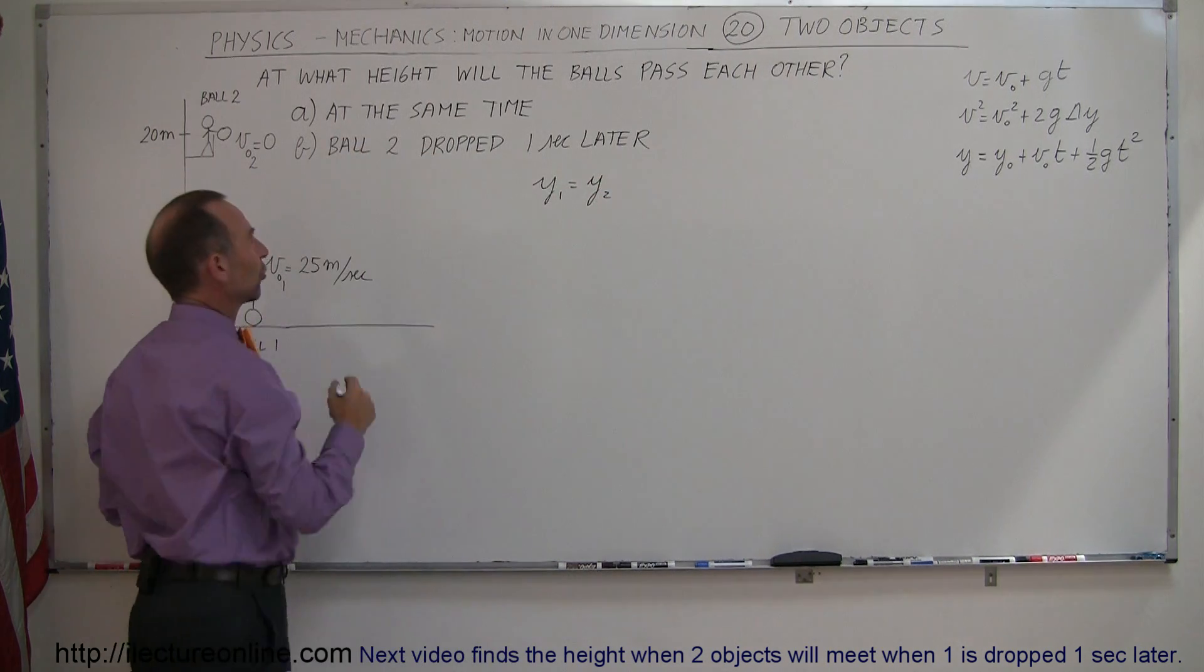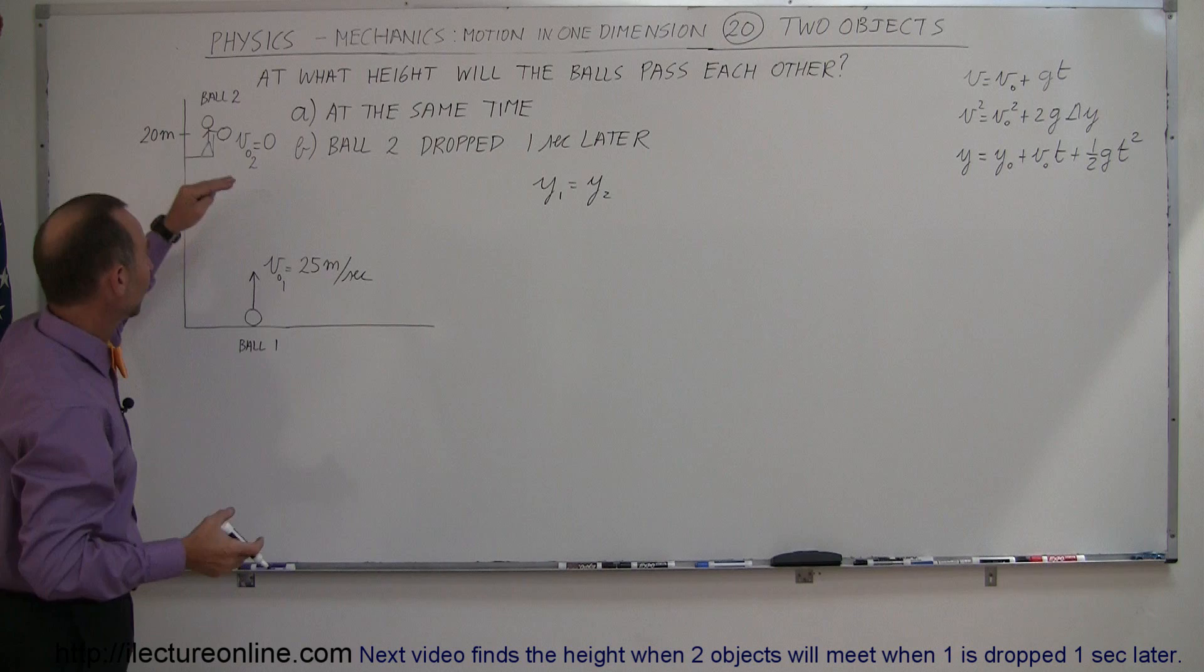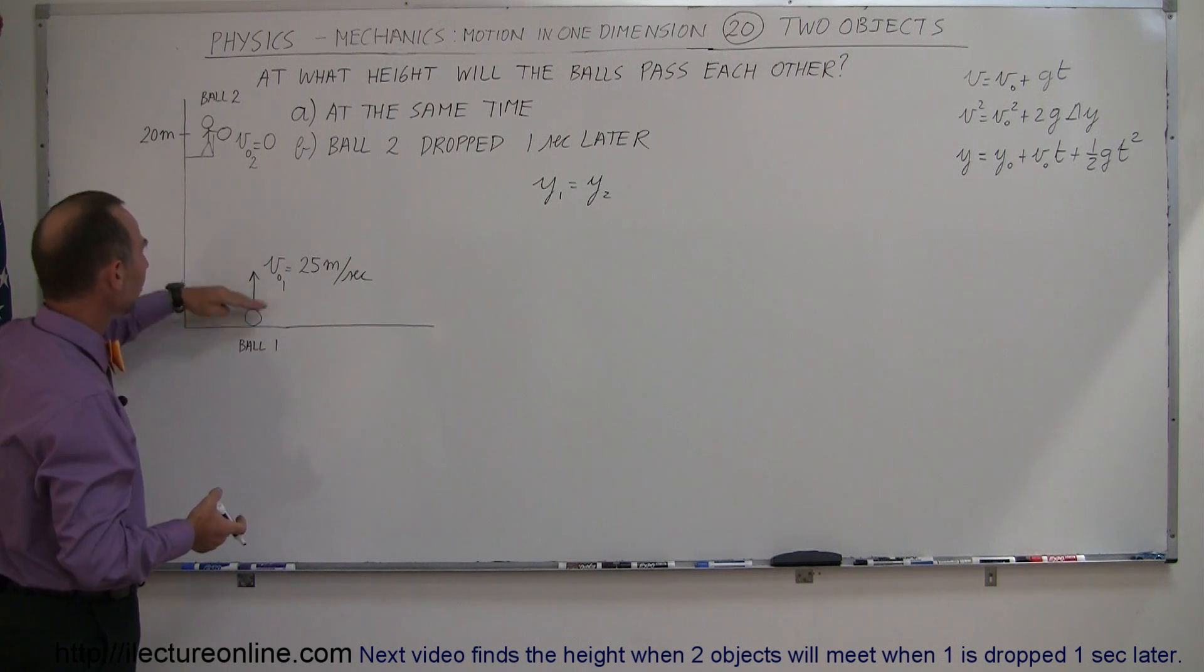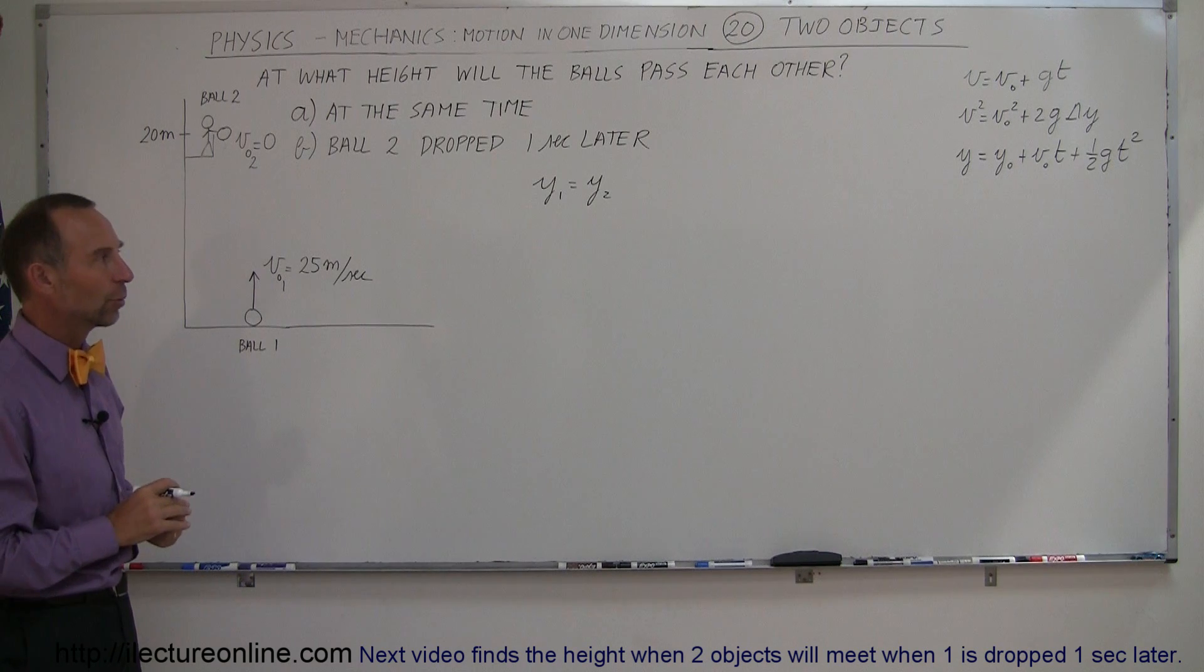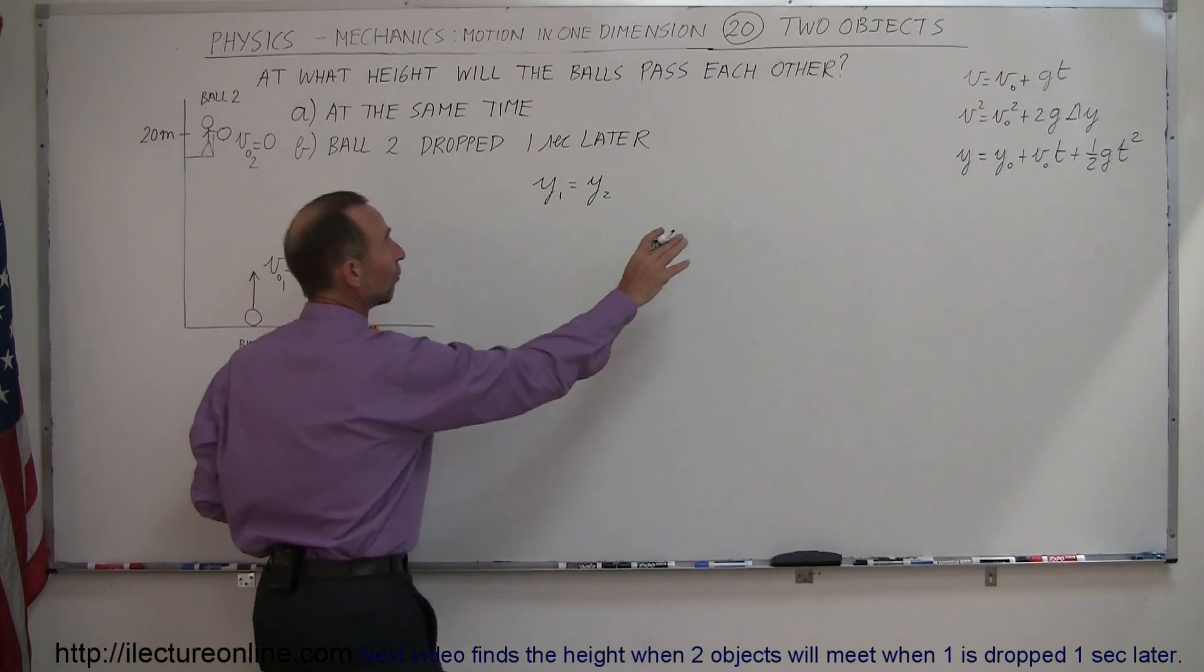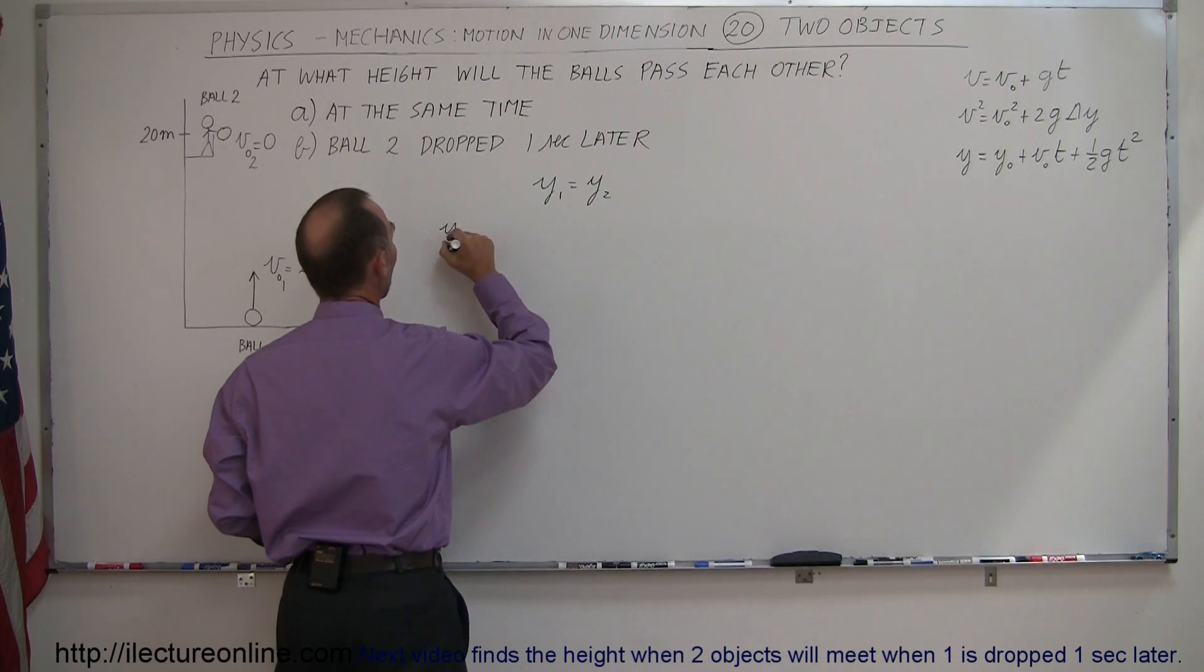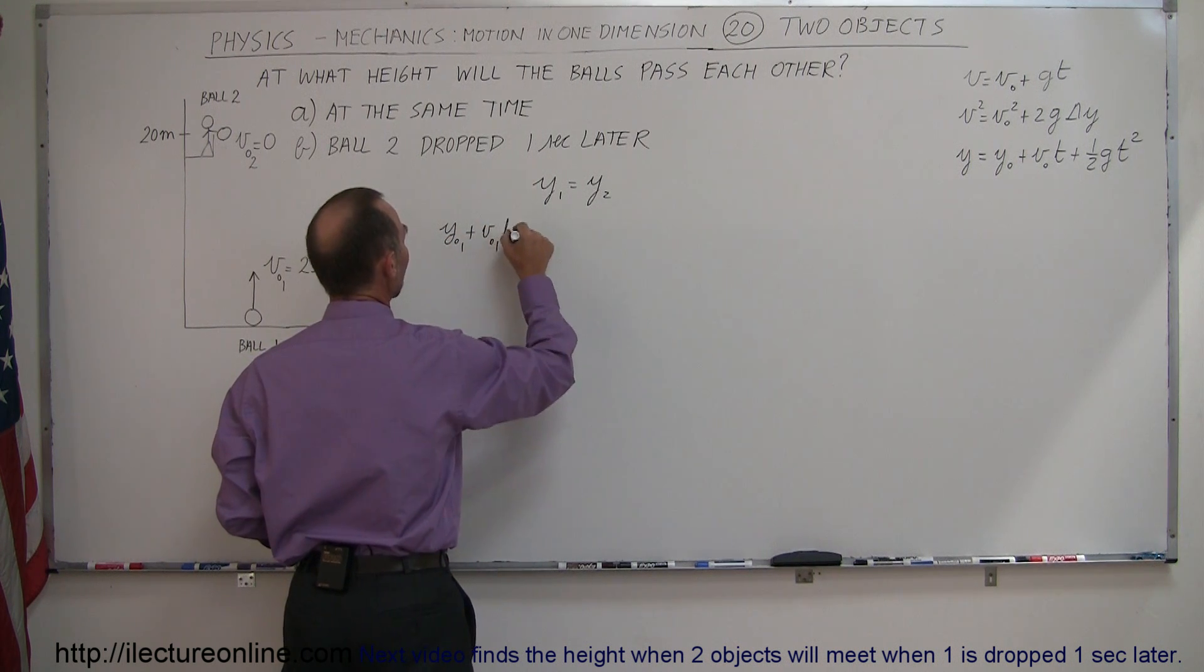We're going to take the case first when they're dropped, when the first ball is dropped, or the first ball is thrown up and the second ball is dropped at the very same time. So, t is the same for both equations. So, we can then write for y1, we can say that y initial for the first ball, plus v initial for the first ball times time,